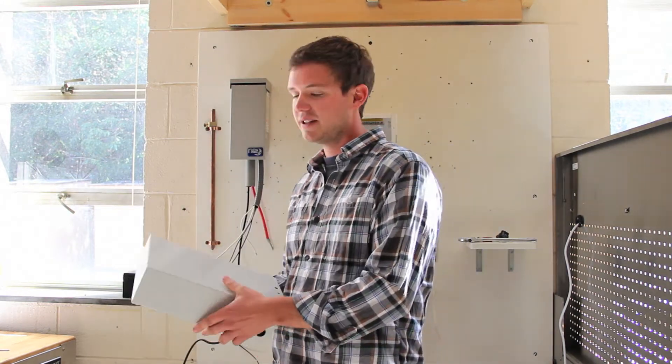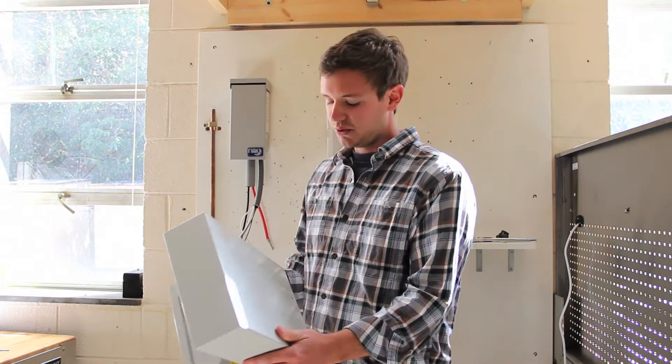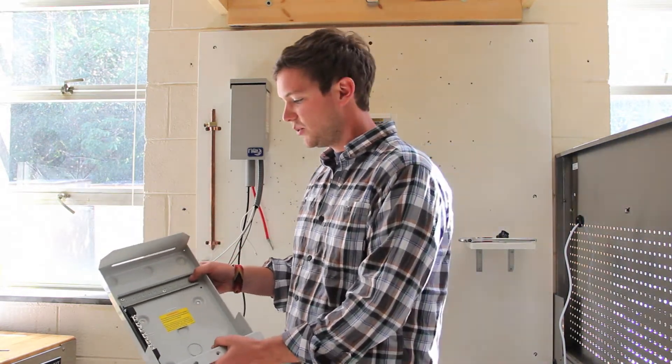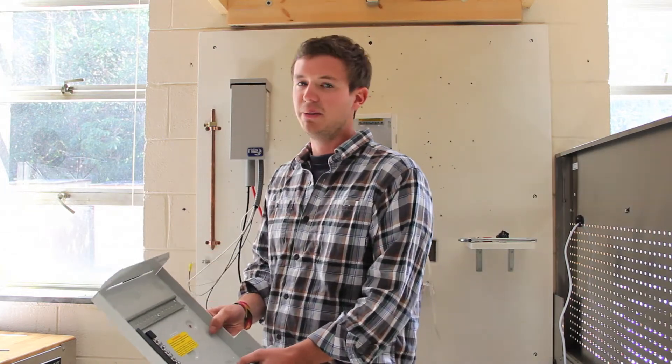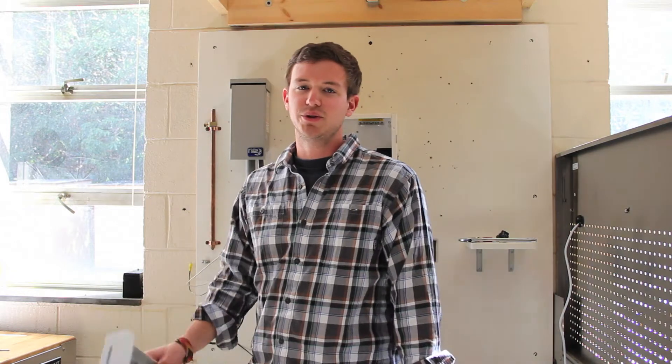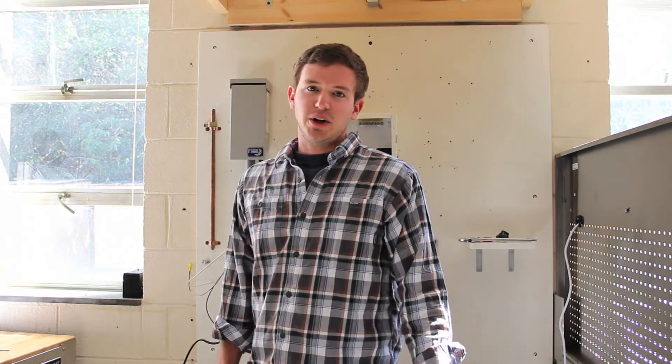Here's a larger combiner box that might be used in a commercial system. There's a spot for DIN rail mounted breakers or tip out fuse holders. Depending on your application, you might use a breaker for a lower voltage system. Most breakers are rated for either 125 volts DC or 150 volts DC.